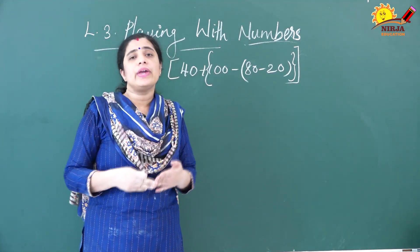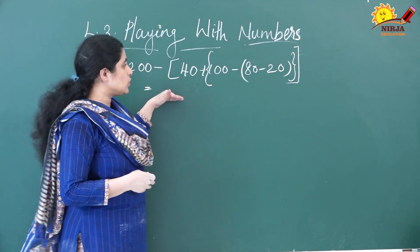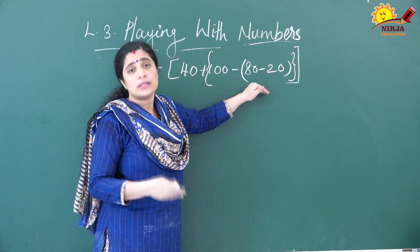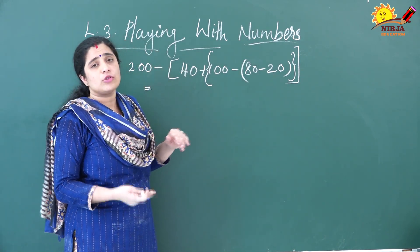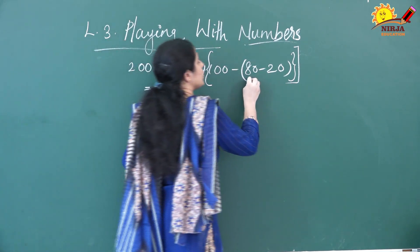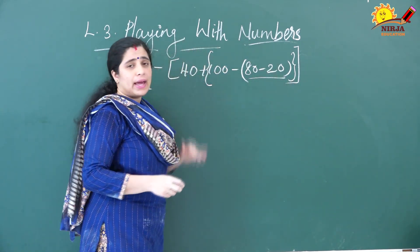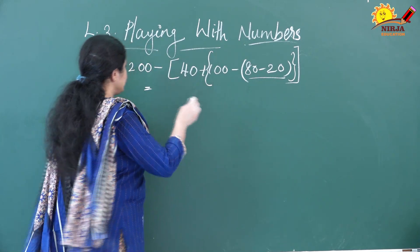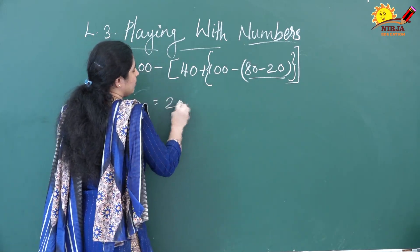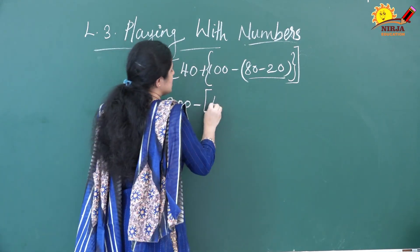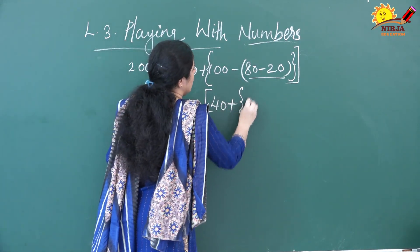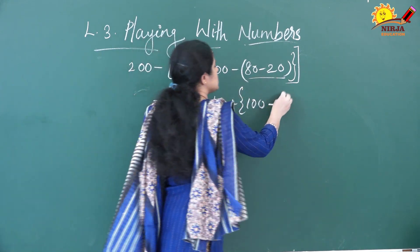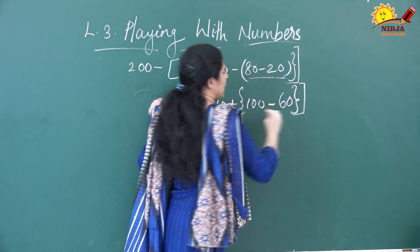Here I have written one question in which you can see there is a square bracket, a curly bracket, and a simple round bracket. We will see how to solve this problem. According to the order, we first open the round bracket since there is no line bracket. So 200 remains as it is, the square bracket is written as itself — 40 plus 100 minus, and inside the round bracket 80 minus 20 equals 60.